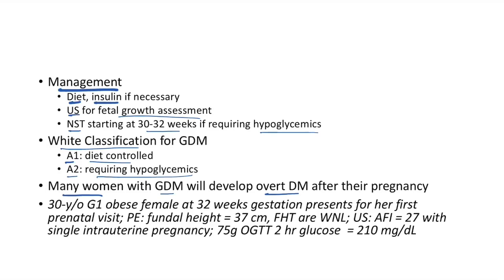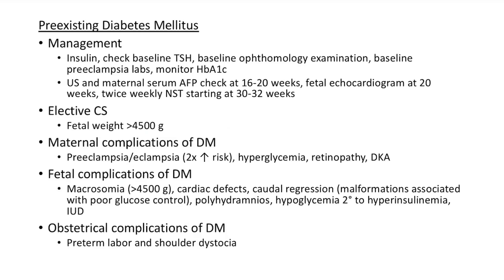Clinical case: A 30-year-old obese primigravida at 32 weeks presents for her first prenatal visit. Fundal height is 37 cm, fetal heart tones are normal. Ultrasound reveals amniotic fluid index of 27 (polyhydramnios). GDM is a risk factor for polyhydramnios. A 75 g OGTT was done and 2-hour glucose was 210 mg/dL — this is a classical case of gestational diabetes mellitus.